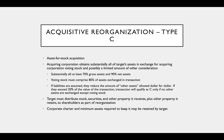The 'substantially all' test requires at least 70% of the gross assets and 90% of the net assets to be acquired, and the voting stock must comprise at least 80% of the assets exchanged in the transaction. If liabilities are assumed, they reduce the amount of other assets allowed dollar for dollar. So if they exceed 20% of the value of the transaction, the transaction will qualify as a Type C reorg only if no other assets are exchanged except voting stock.